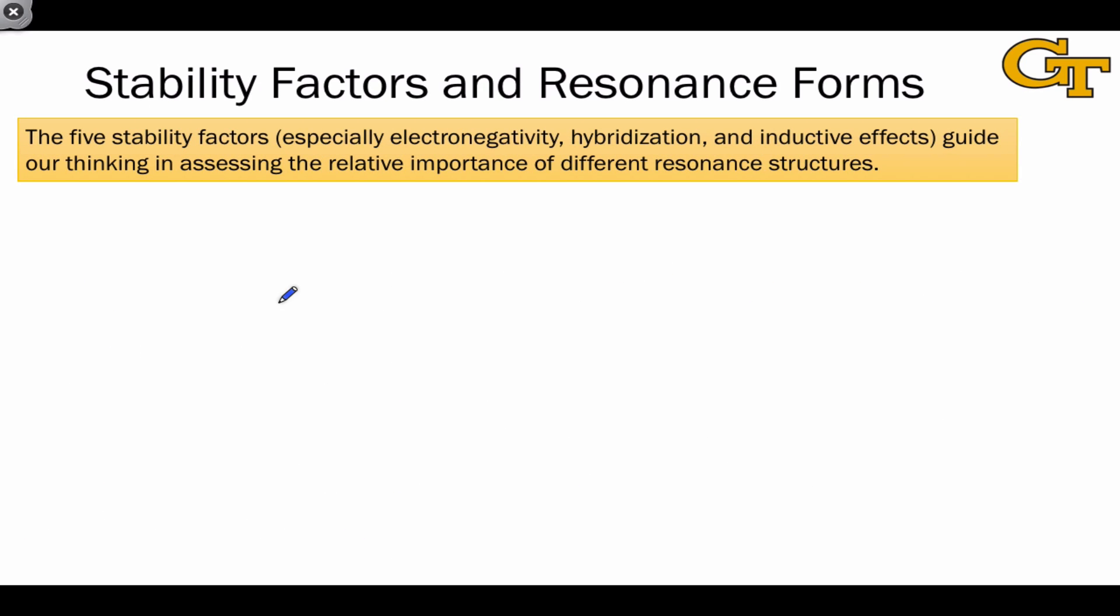Although a natural bond orbital calculation provides us with a fairly rigorous way to obtain resonance weights for a molecule, what we'd like to be able to do is qualitatively assess the importance of resonance structures. And now that we've seen the five stability factors, we can do this. The most important in terms of assessing resonance forms are electronegativity, hybridization, and inductive effects, all of which affect the stability of electron pairs within Lewis structures.